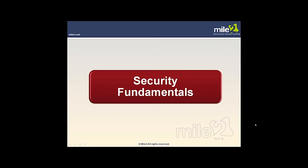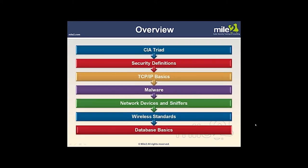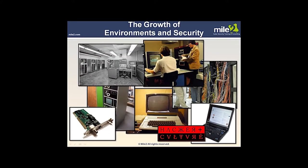Welcome to Security Fundamentals. In this chapter, we're going to look at the CIA Triad — Confidentiality, Integrity, Availability — Security Definitions, TCP/IP Basics, Malware, Network Devices and Sniffers, Wireless Standards, and Database Basics.